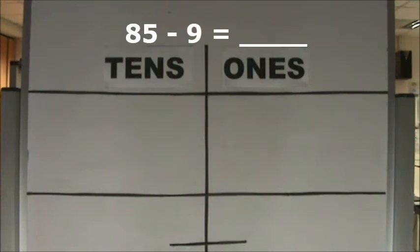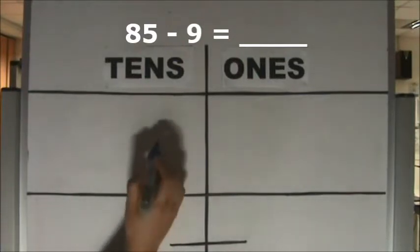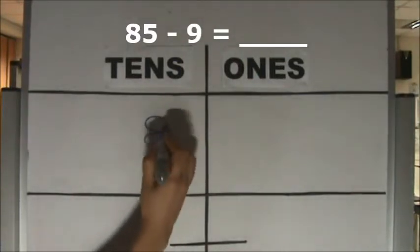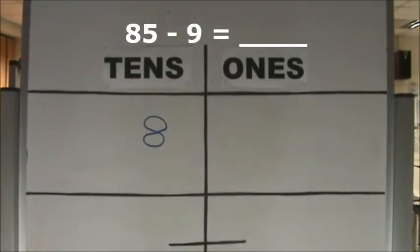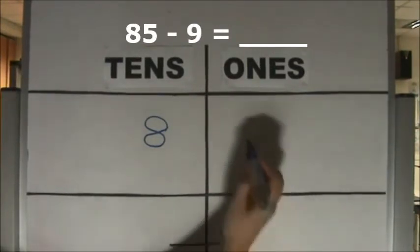Let's subtract 9 from 85 using a place value chart. This is how you write the subtraction equation: 85 minus 9. How many tens are there? There are 8 tens. How many ones are there? There are 5 ones.